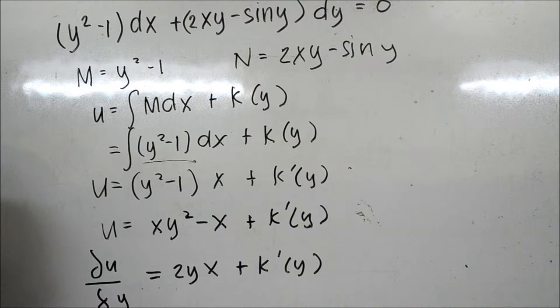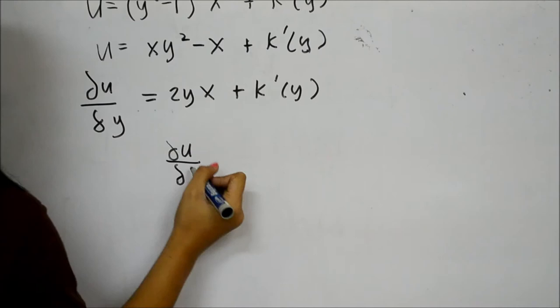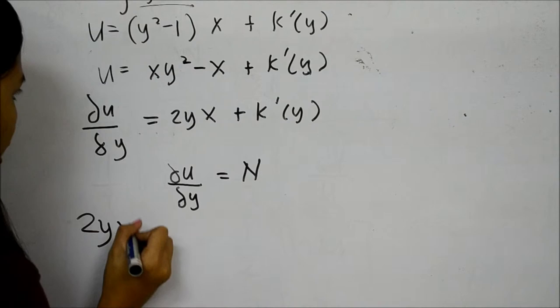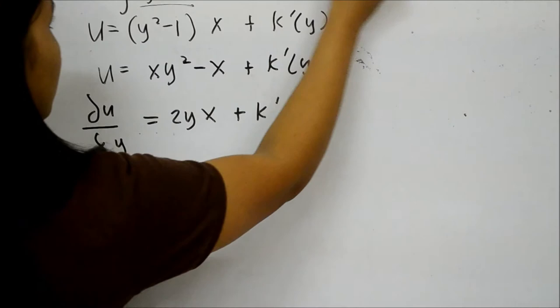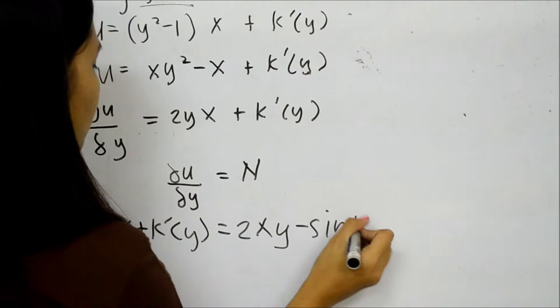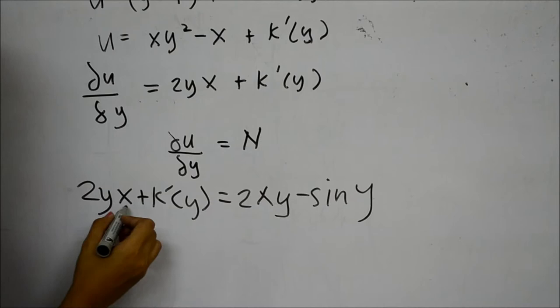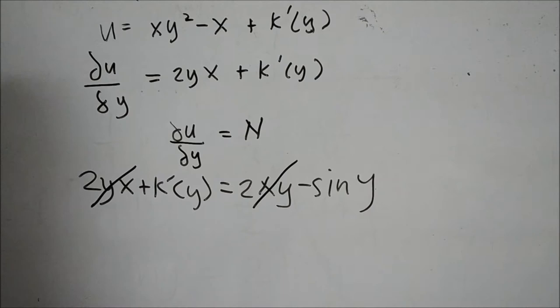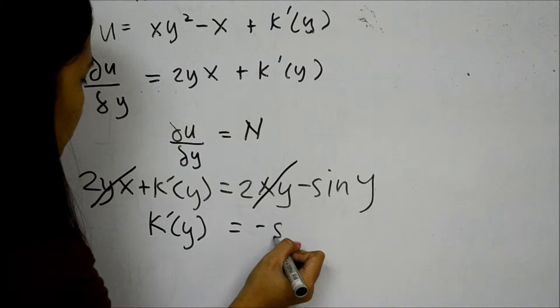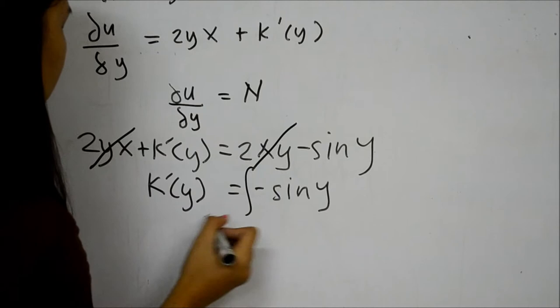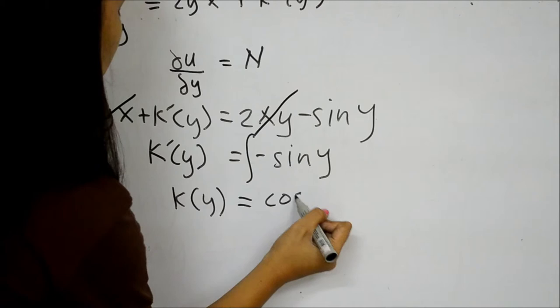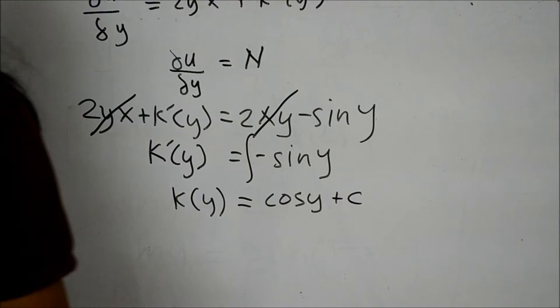The next step is to equate the partial differentiation of u with respect to y to N. Substituting, we have 2xy + k'(y) = 2xy - sin y. Since 2xy is present on both sides, we cancel that term, leaving k'(y) = -sin y. Integrating this, we get k(y) = cos y + C.